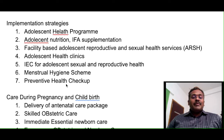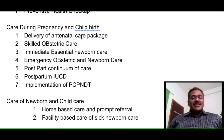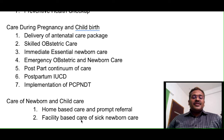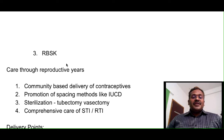Other strategies under phase 3 include care during pregnancy and childbirth: delivery of antenatal care package, skilled obstetric care, immediate essential newborn care, emergency obstetric and newborn care, and postpartum continuum of care including postpartum IUCD and implementation of PCPNDT. Care of the newborn and child includes home-based care and prompt referral, facility-based care of sick newborns, and Rashtriya Bal Swasthya Karyakram (RBSK).